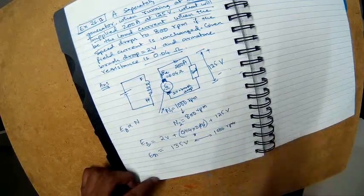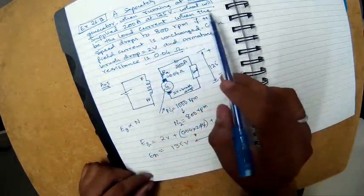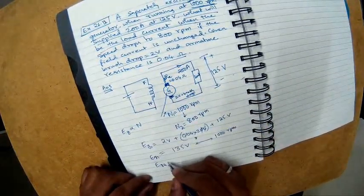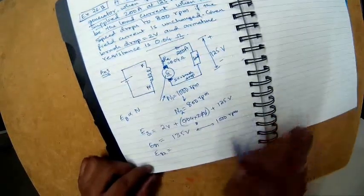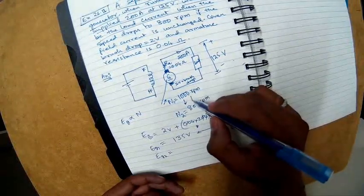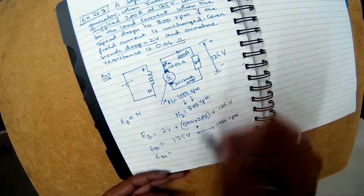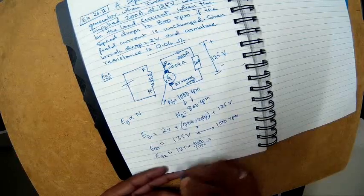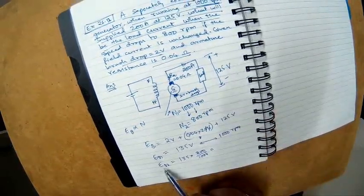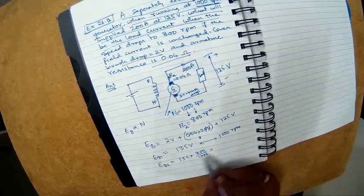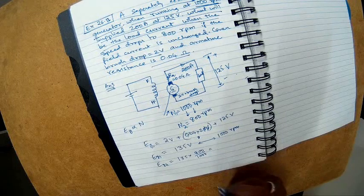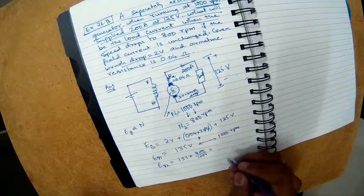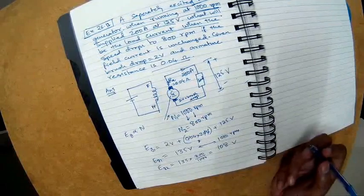The question is what will be the load current when the speed drops to 800 RPM. Let's calculate EG2. Proportionally, EG2 will reduce. The proportion of reduction is 800/1000, so EG2 = 135 × 800/1000. EMF generated is proportional to speed, so as speed drops EMF should also drop. My calculator gives 108 volts. If the EMF is 108 volts, how much will be the output current is the question.